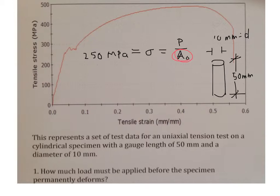The area is equal to pi r squared equals pi times 5 millimeters, 5 times 10 to the minus 3 meters squared. I'm just going to rewrite that as 25 pi times 10 to the minus 6 square meters is the original area.